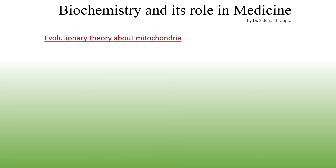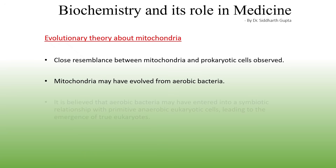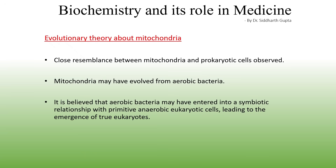There is an interesting theory about the origin and evolution of mitochondria. Mitochondria closely resemble prokaryotic cells, leading some to believe they may have evolved from aerobic bacteria. The theory proposes that aerobic bacteria established a symbiotic relationship with primordial anaerobic eukaryotic cells and assimilated with them, leading to the emergence of true eukaryotic cells as we know them today.